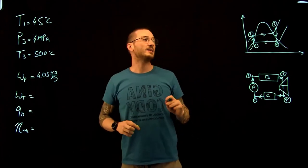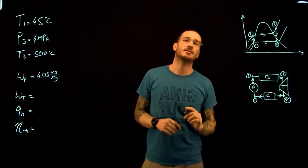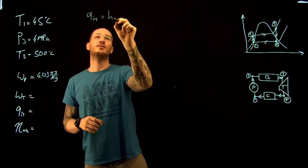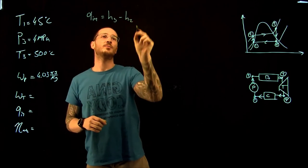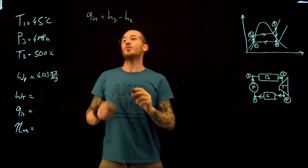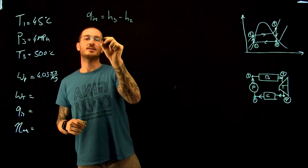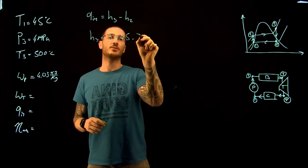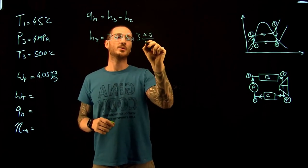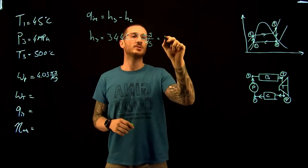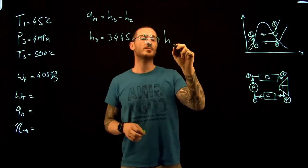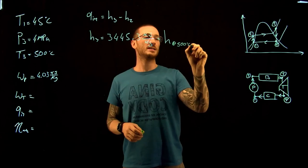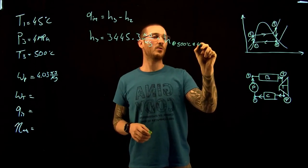The next thing is the heat added to the system. Q_in equals the enthalpy at point three minus the enthalpy at point two. From the superheated vapor tables at 500°C and 4 MPa, the enthalpy at point three is 3,445.3 kJ/kg.